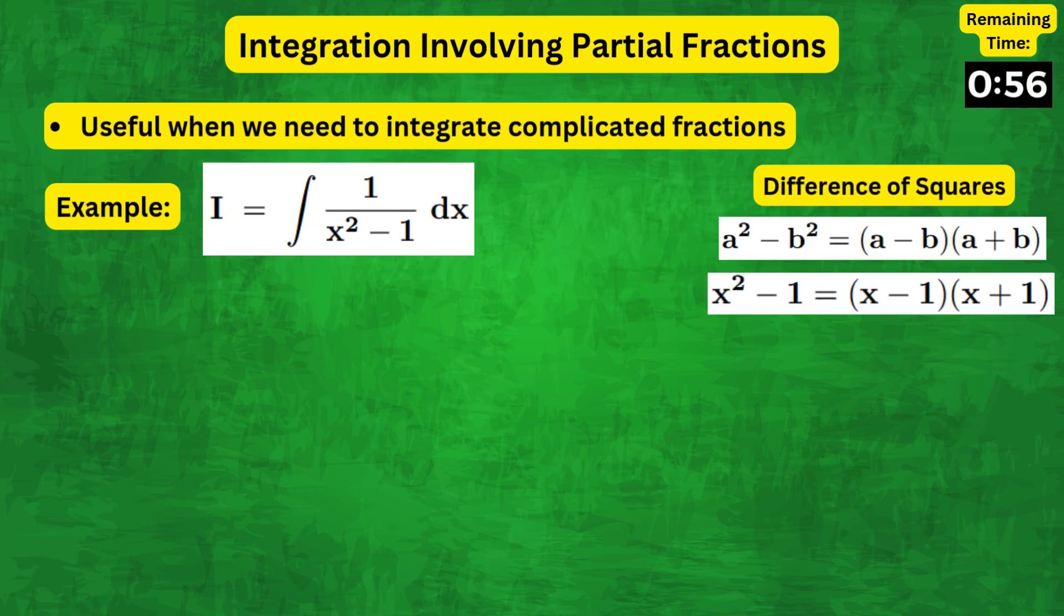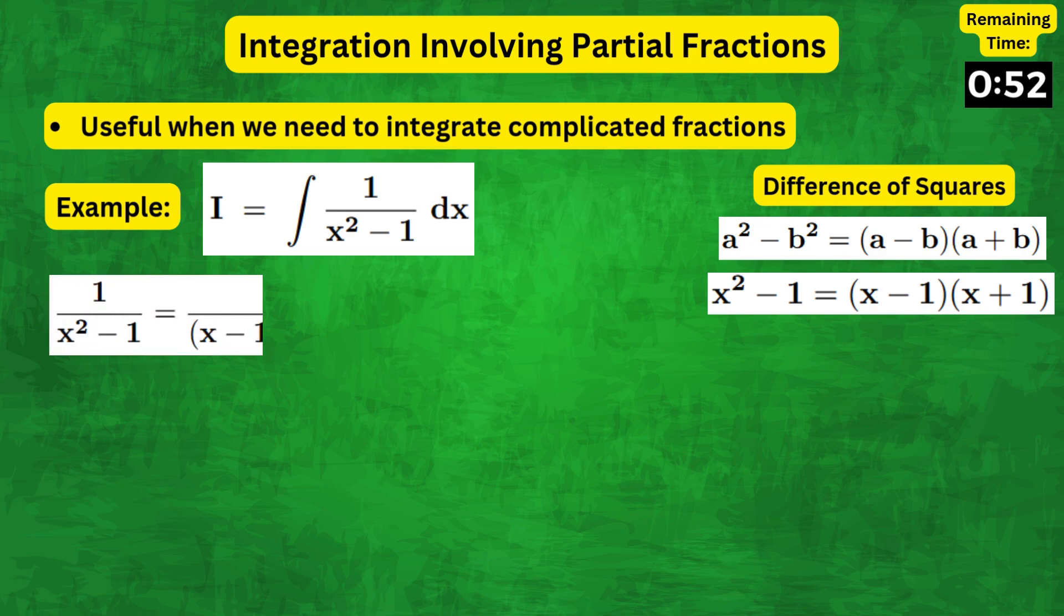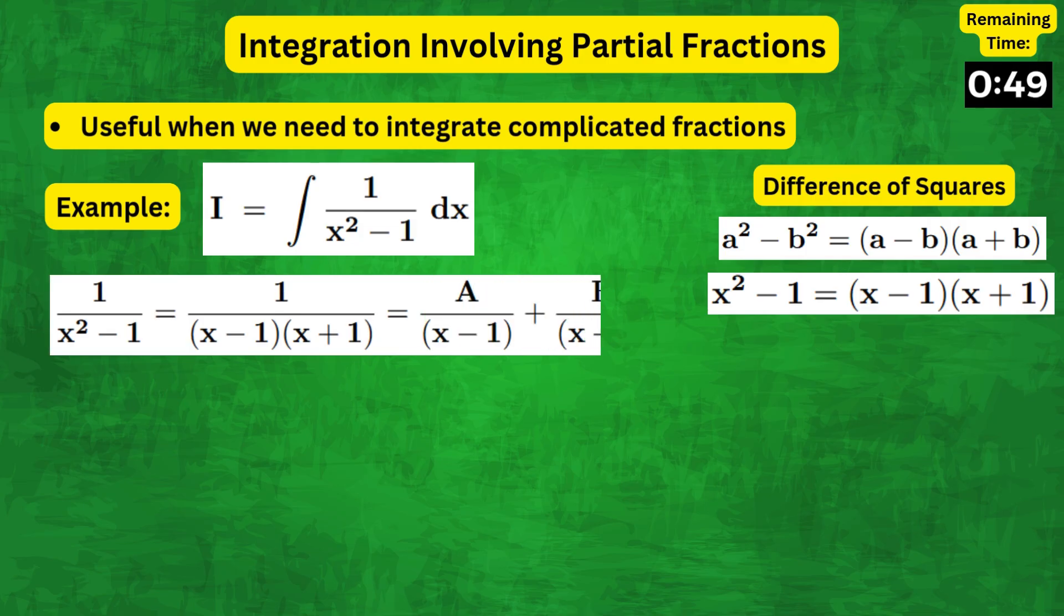We get x squared minus 1 equals x minus 1 times x plus 1. Then, we can express the fraction in the partial fraction form as 1 over x squared minus 1 equals a over x minus 1 plus b over x plus 1. So,